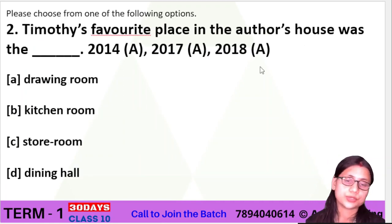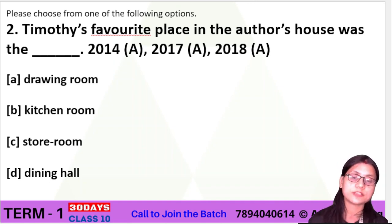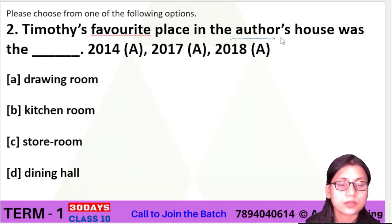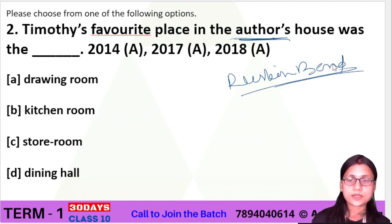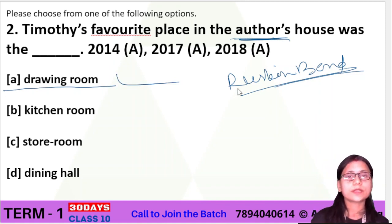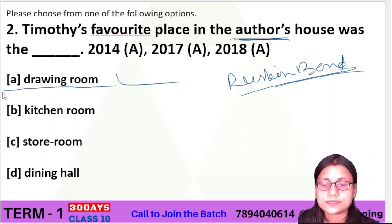Now question number 2 is an important question. 'Timothy's favourite place in the author's house was dash.' The author here is Ruskin Bond. So what was Timothy's favourite place in Ruskin Bond's house? The answer is the drawing room. Timothy used to spend a lot of time on the couch or sofa in the drawing room. So the drawing room is the right answer.